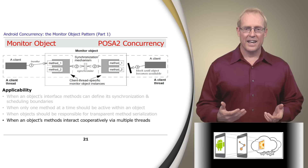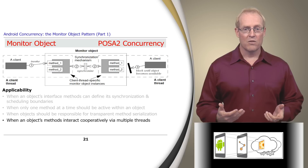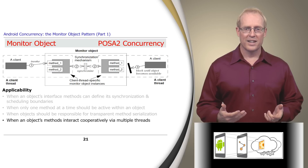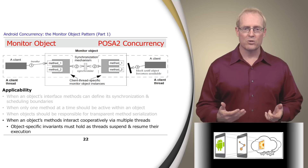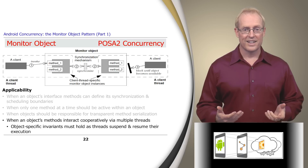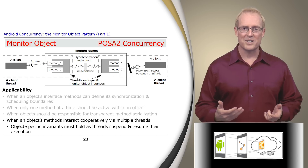Finally, an object's methods may need to interact cooperatively during their execution. For example, if one thread must block awaiting a resource during its execution, it should be able to relinquish its thread of control voluntarily, so methods called from other threads can access the object to update the resource. When a method relinquishes its thread of control voluntarily, it must ensure that object-specific invariants hold, and it must resume executing within an object only when it's in a stable state.